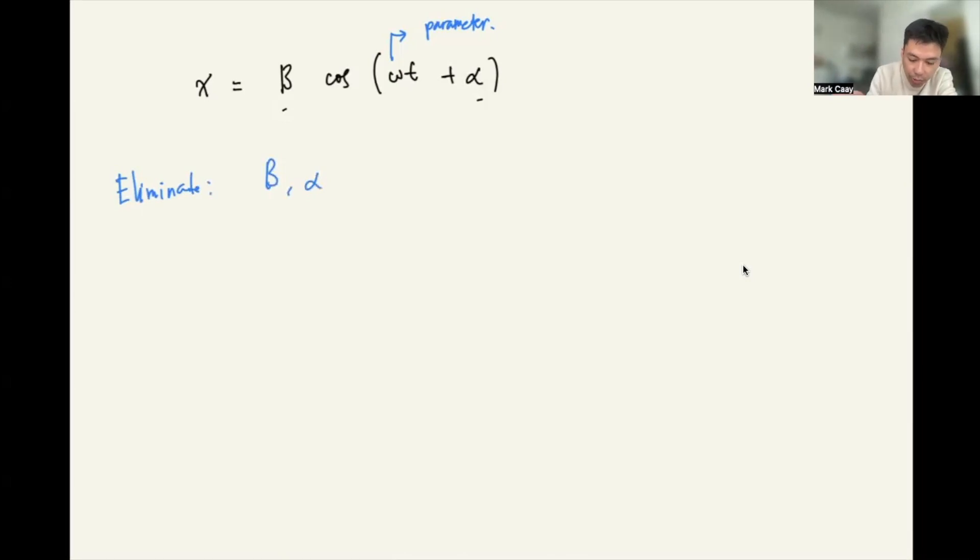Let's take the derivative first with respect to t. So we have dx/dt. How do we take the derivative for this?